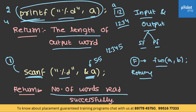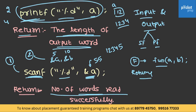Suppose for example it is reading two variables, a and b — 5 and 10 respectively — then it returns 2. Scanf actually returns the number of values that are read successfully, and printf actually returns the length of the output word.